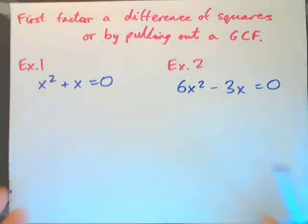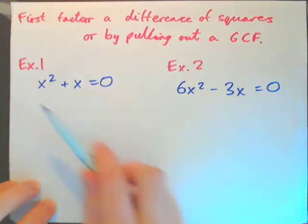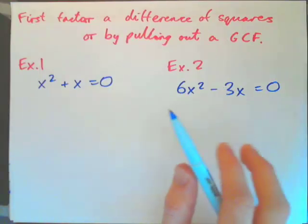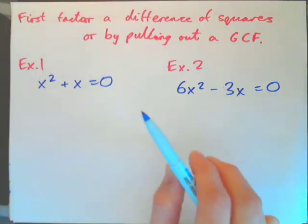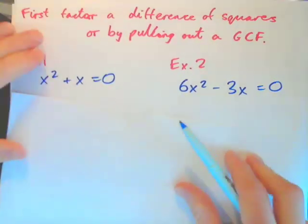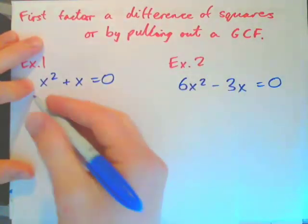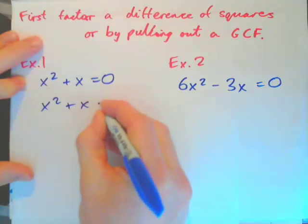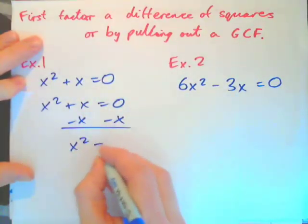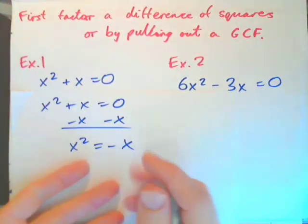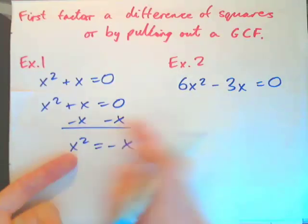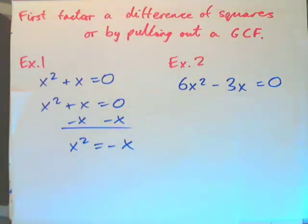Let's start with example 1. We have x squared plus x equals 0. If you tried to solve that using linear methods, like subtracting x from both sides, you'd get x squared equals negative x. We cannot isolate x with linear methods by adding and subtracting to both sides.